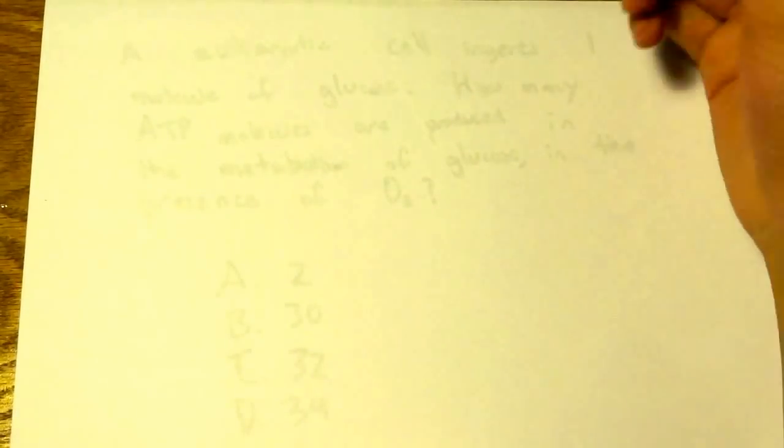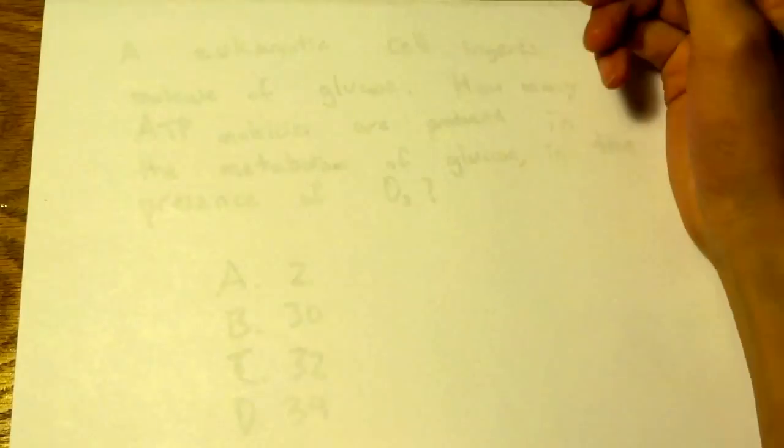The first thing we want to do is figure out the different steps and how much ATP, NADH, and FADH2 are produced in each step.